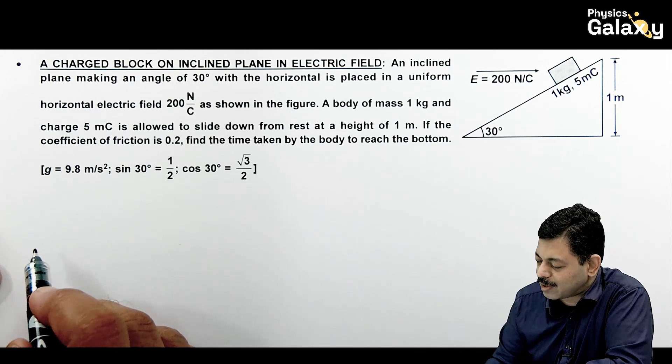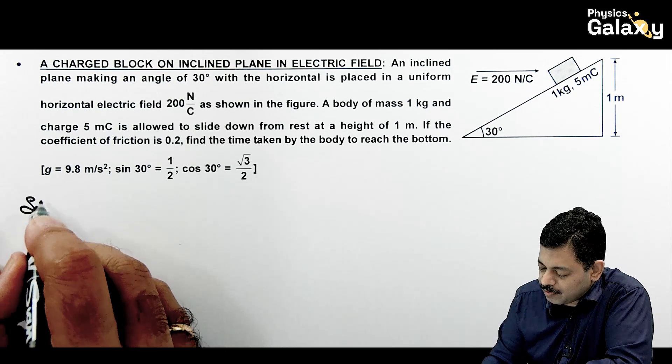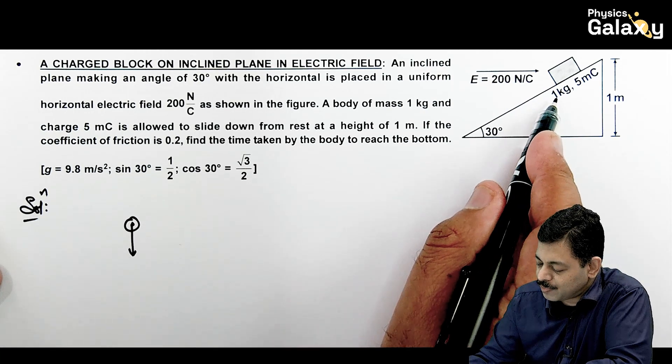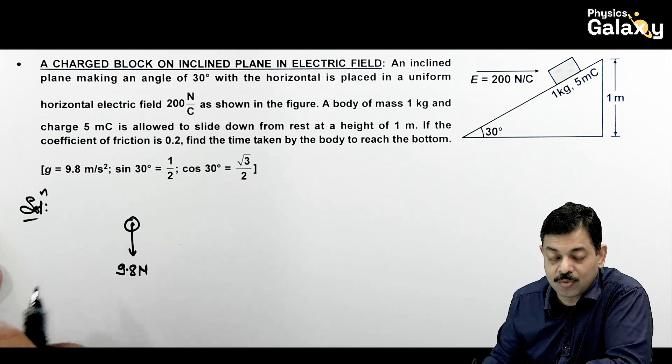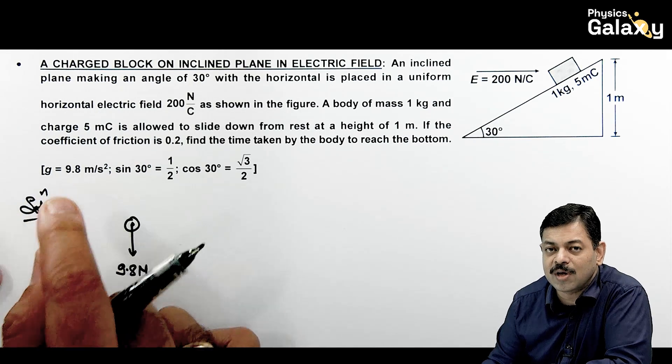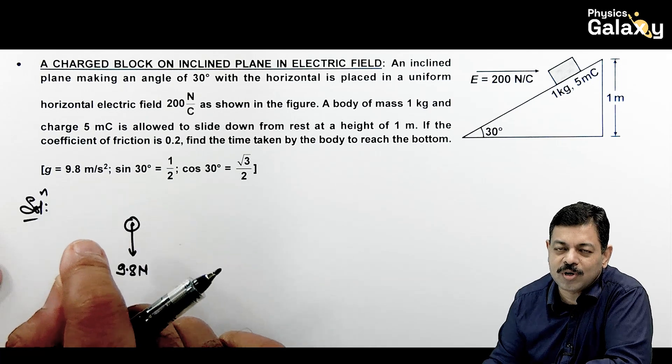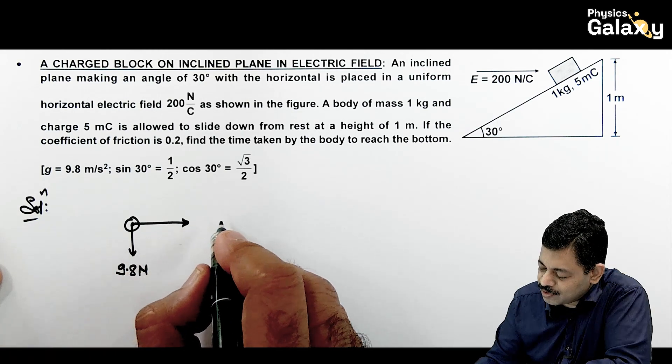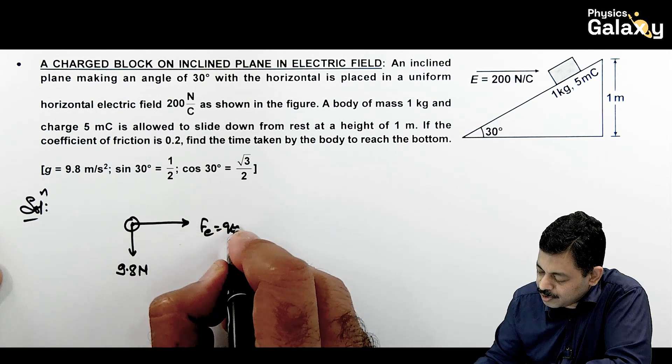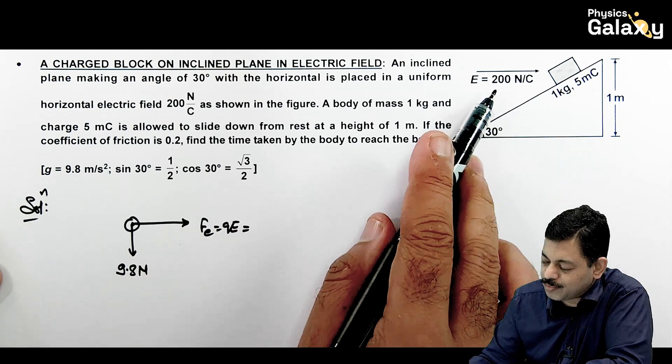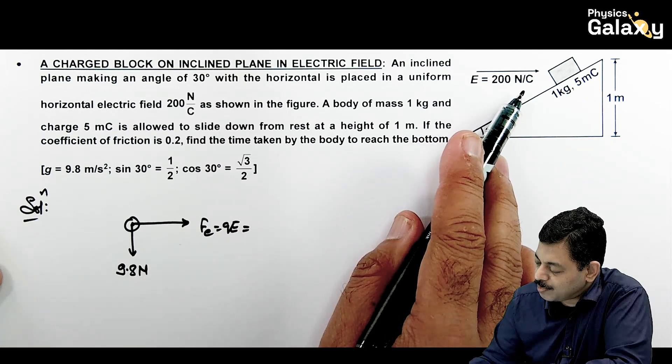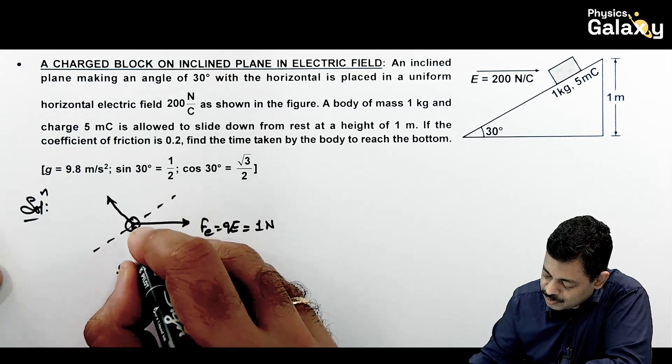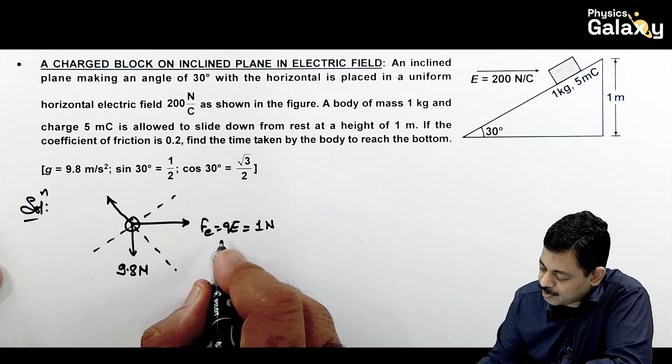So directly here you can write, if we check the free body diagram of this block, downward it will experience Mg. Mass is 1 kg, g is 9.8, so this is 9.8 Newton. Due to electric field, it will experience a force which is QE. So electric force here is QE, the charge is 5 millicoulomb multiplied by 200 Newton per coulomb electric field, so there is 1 Newton. And a normal reaction it will experience in this direction, which is given by the sum of the component of these two forces perpendicular to the incline.